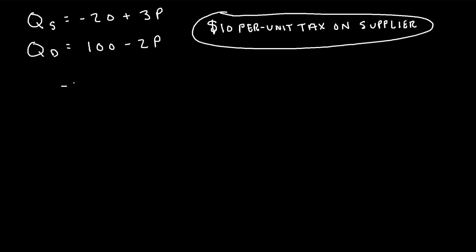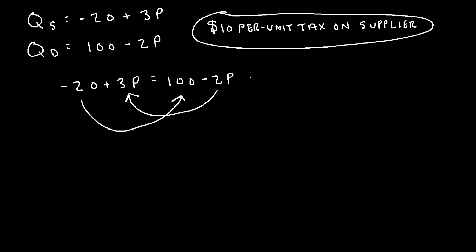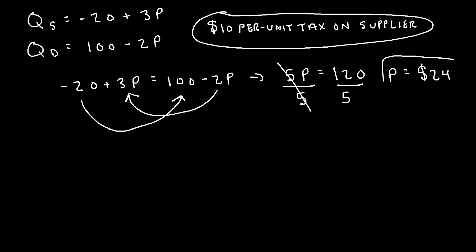So we'll say negative 20 plus 3p is equal to 100 minus 2p. If we add 2p to the left-hand side and add 20 to the right-hand side, we get 5p is equal to 120. To solve for p, we divide both sides by 5, and p is equal to 120 divided by 5, which turns out to be 24. So the market equilibrium price before the tax is $24.